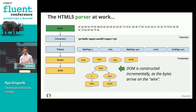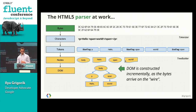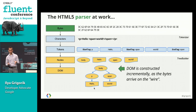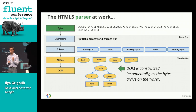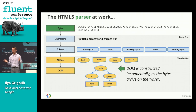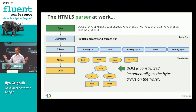The bytes come in, we interpret them as characters, and the browser creates tokens from the string — a p tag, a hello string, a span tag, and so on. It creates nodes and connects them into a tree. The HTML5 specification provides a specific algorithm for how you go from a text string to a tree. This is important because prior to HTML5 there was no specification, which is why different browsers would produce different trees from the same HTML. HTML5 finally gives us a spec for this.